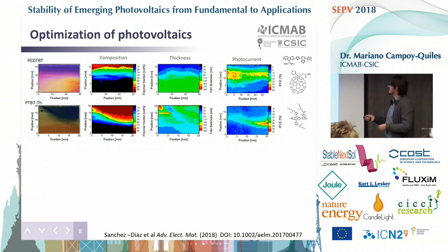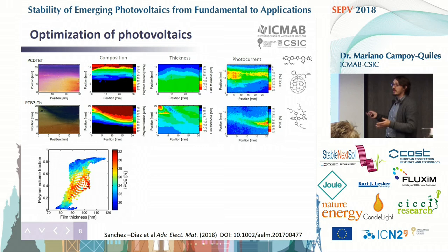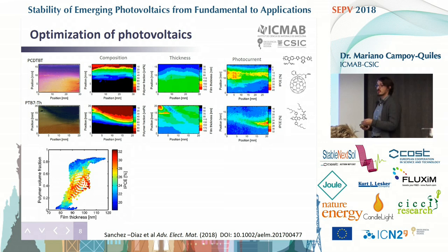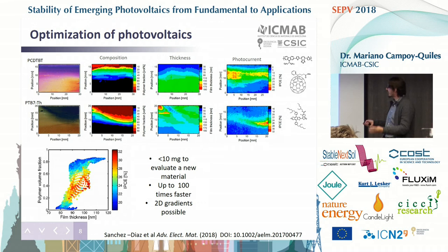This is another example for PTB7-TH together with fullerene. The nice thing is that you can extract X and Y from here, and basically you have an image in which you have film thickness, volume fraction, and the photocurrent. Imagine asking a PhD student to make about 10,000 devices to have statistics — this is that statistics. From here you can know the window of parameters that are good for your material in terms of thickness and volume fraction for the photocurrent. It takes about less than 10 milligrams to evaluate whether the material is good or not for solar cells, and you can say that you are 100 times faster than your competitors.